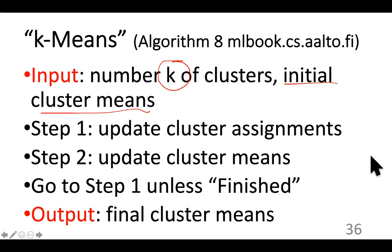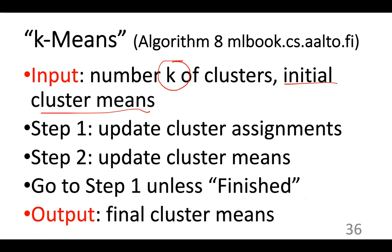How does the algorithm choose the cluster for a data point if the distance is identical to two different means? This is resolved in Algorithm 9 in the course book. For simplicity, you can assume this doesn't happen. If it does, you must break the tie — for example, assign the data point to the cluster mean with the smallest index. This is purely arbitrary; you just need some tie-breaking strategy.